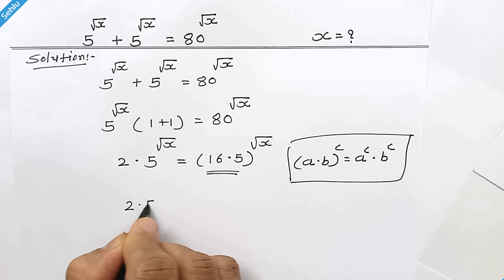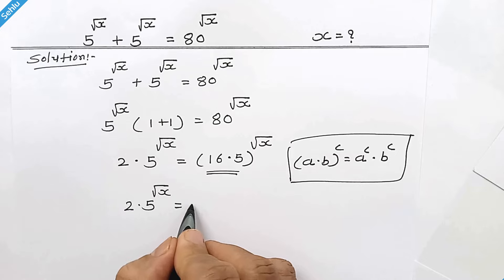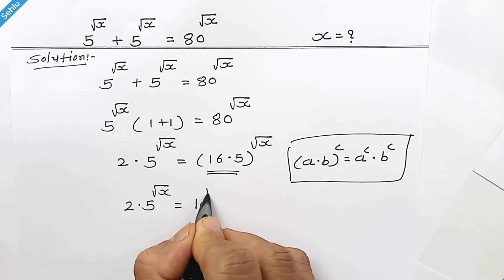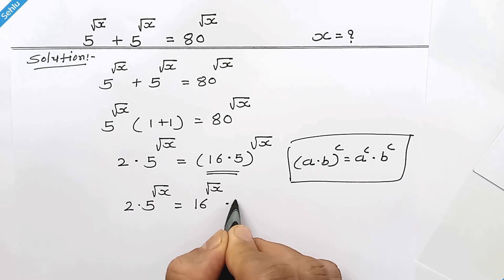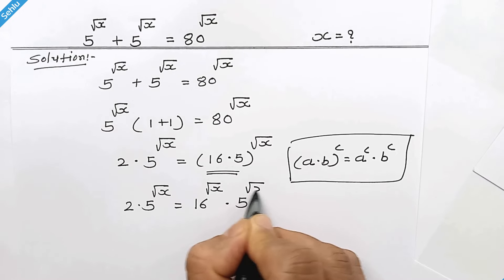So we have 16 to the power square root of x times 5 to the power square root of x.